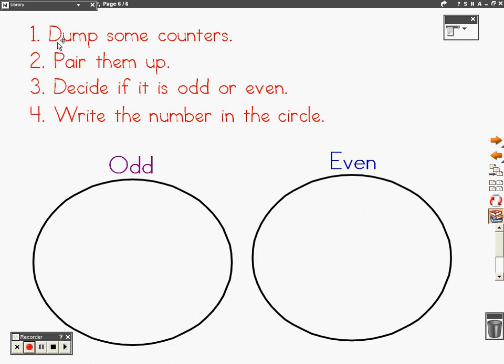You can practice at home. Put some counters in a cup. You can use any object - pennies, pasta, anything that you have a lot of. Dump some of the counters out of your cup. Pair them up. Decide if the number is odd or even. Write your odd numbers on one side. Write your even numbers on the other side.